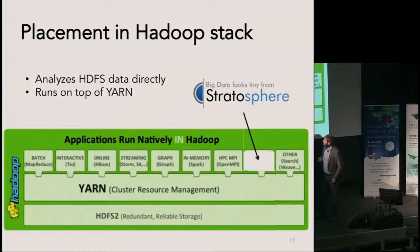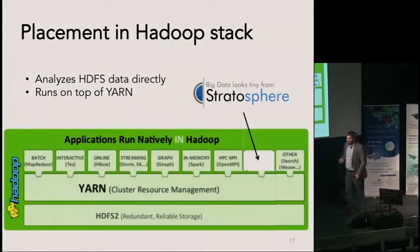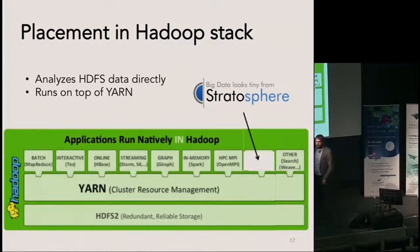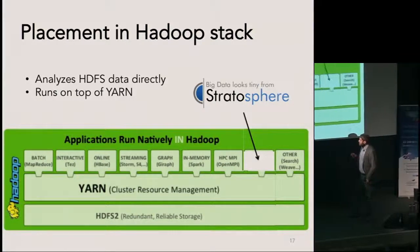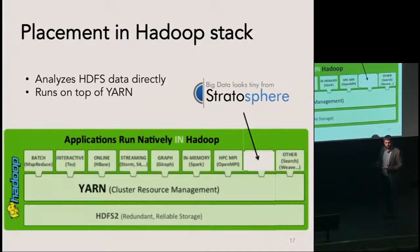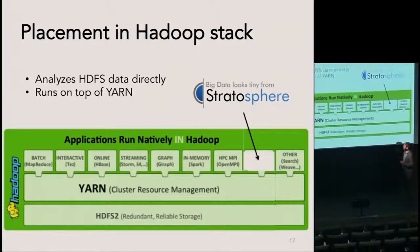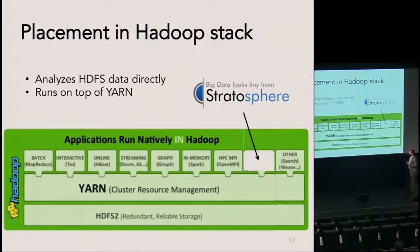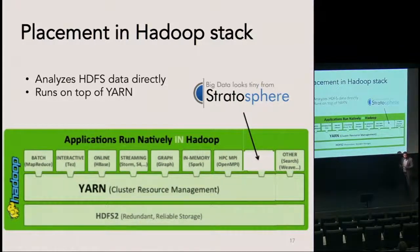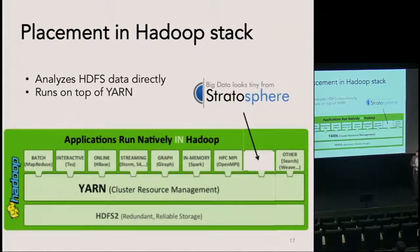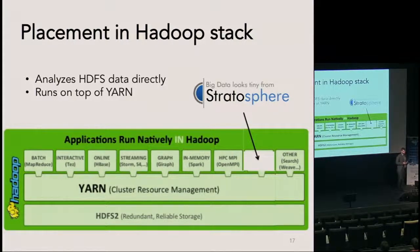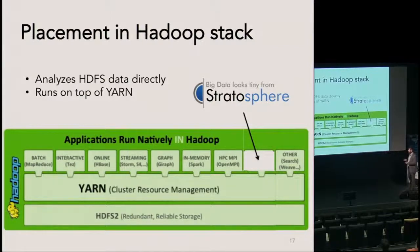In the Hadoop stack, the Hadoop project consists of three things: HDFS — the Hadoop distributed file system, where you store your data; YARN — the resource manager that every application talks to and asks for cluster resources; and the MapReduce engine. On top of YARN there are many other applications besides MapReduce. Stratosphere is positioned exactly there — it's another application you can run in your Hadoop cluster alongside MapReduce, Spark, Storm, HBase, and so on.